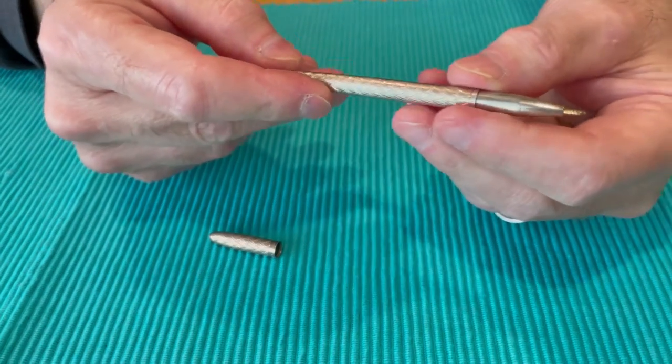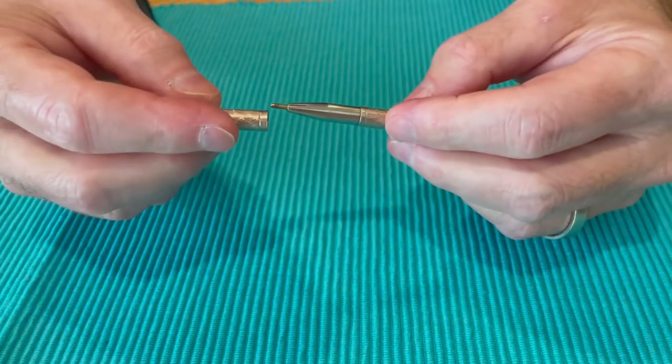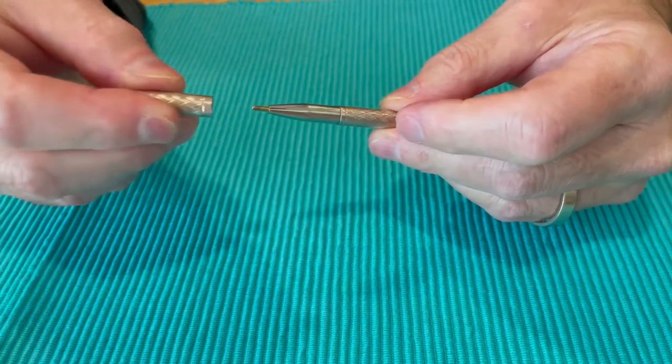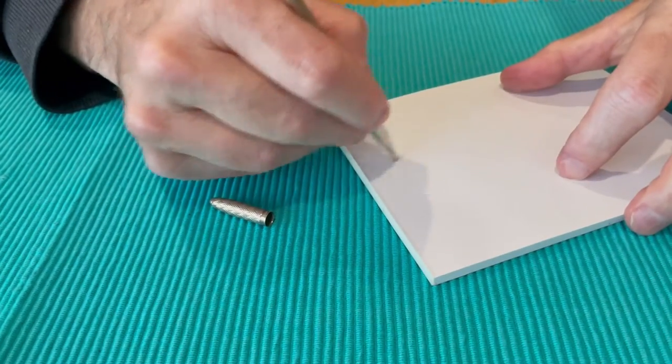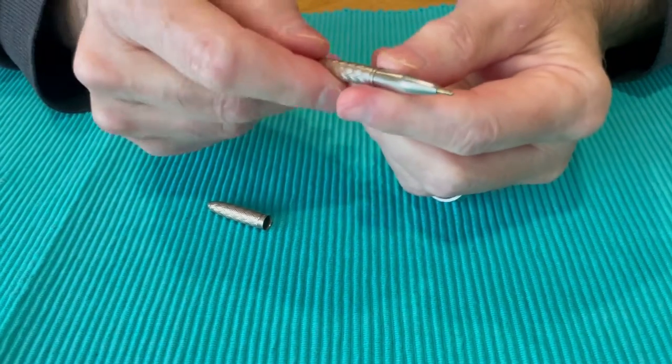And it's not retractable. You just take off the little cover here and there's the pen tip. So of course it's not working because it's 50 years old or longer.